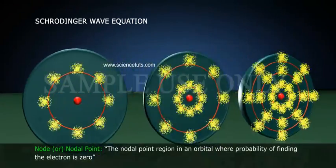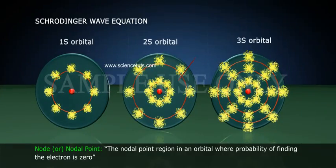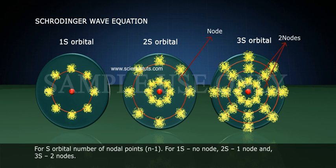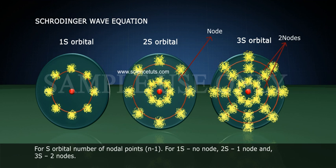Node, or nodal point: the region in an orbital where the probability of finding the electron is zero. For S orbital, the number of nodal points equals n minus 1. For 1S: no node. For 2S: one node. For 3S: two nodes.